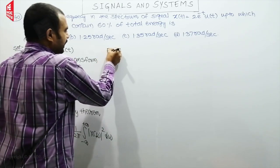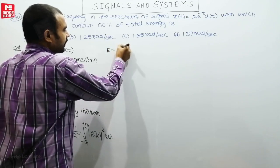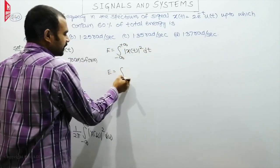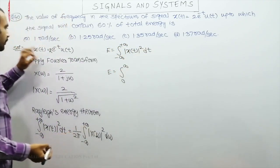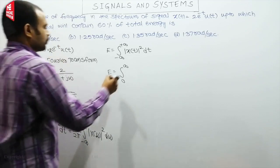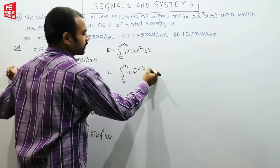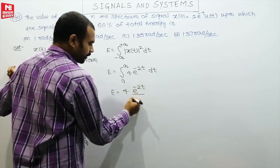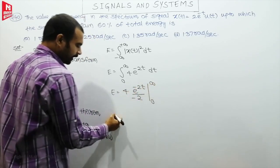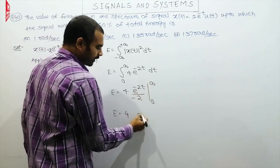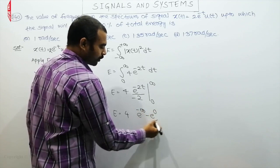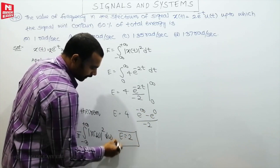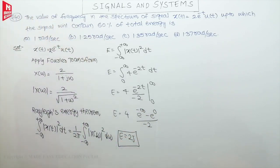First, calculate the total energy: E = integral from 0 to infinity of 4·e^(-2t) dt, since x(t) involves u(t). This gives 4·e^(-2t) divided by (−2), evaluated from 0 to infinity. Substituting limits, the energy equals 2 joules.